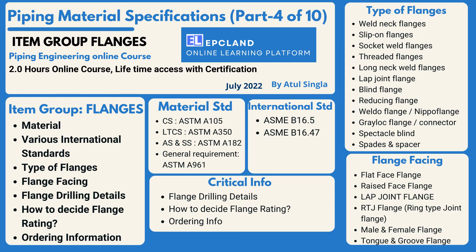So this is how we are going to cover these topics: material standards, various international standards, types of flanges, facing, dimensional details, and ratings. For ratings, we look into two different methods — one using standard tables, and the second by calculating the flange rating. Then we look into the ordering information so that we know what a purchaser has to specify for the manufacturer to understand what they have to manufacture.